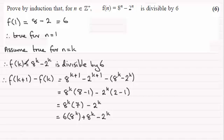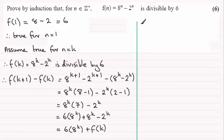Okay. So what we've got here is 6, 8 to the power k plus another f(k). And so that means that if I add f(k) to both sides, what we've got is therefore f(k+1) equals 6 times 8 to the power k plus 2f(k).